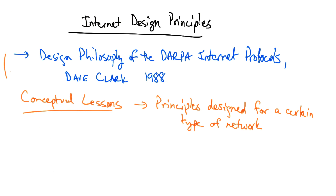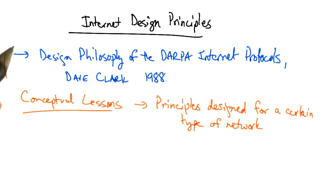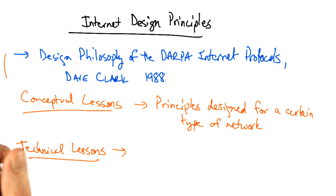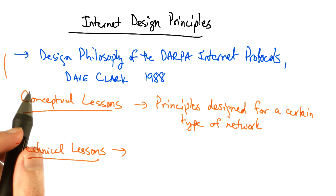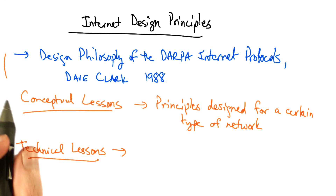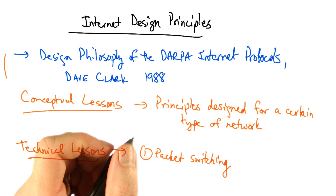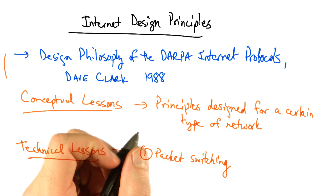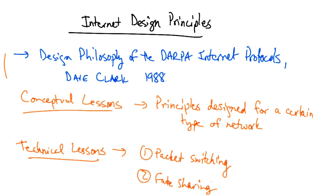That's not to say that some of these design choices are right or wrong, but rather that they simply reflect the nature of our understanding at the time, as well as the environment and constraints that the designers faced for the particular network that existed at that time. Some of the technical lessons from the original design have turned out to be fairly timeless. One concept is packet switching, which we will discuss in this lesson. And another is the notion of fate sharing or soft state, which we will discuss in a subsequent lesson in the course.